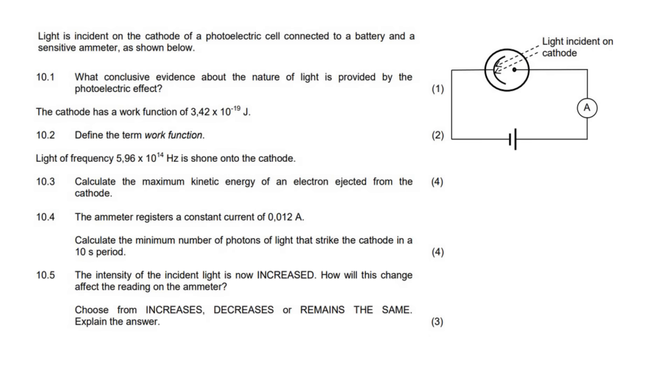Light is incident on the cathode of a photoelectric cell connected to a battery and a sensitive ammeter as shown below. We know that this is the photoelectric effect. If you take light and shine it onto the surface of a metal, then electrons will be released and flow around the circuit. The question asks: what conclusive evidence about the nature of light is provided by the photoelectric effect?